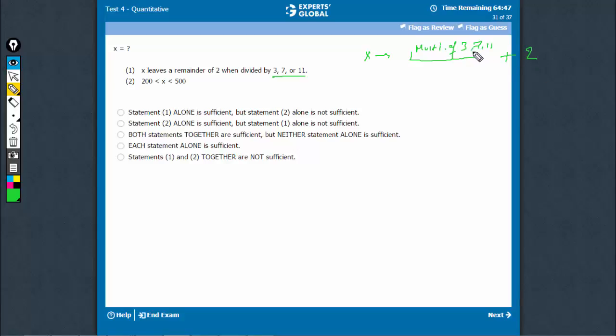So, the smallest multiple of 3, 7, 11 would be the LCM of 3, 7, 11. With nothing common, the LCM would be 3×7×11. 21×11 is 231. That's the LCM. Add 2 to it, turns out to be 233.